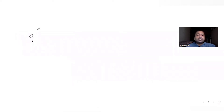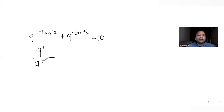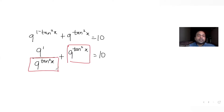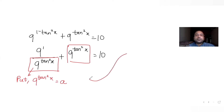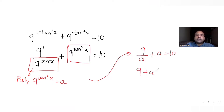The equation is 9^(tan²x) + 9^(tan²x) rewritten as 9 raised to 1 divided by 9 raised to tan²x, plus 9 raised to tan²x, equals 10. Substituting a = 9^(tan²x), the expression becomes 9/a + a = 10.